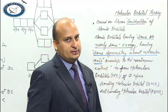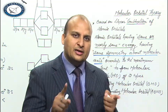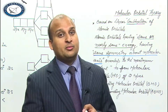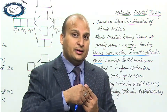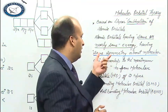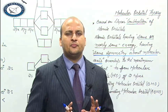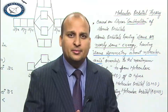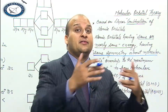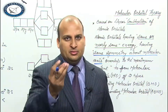Same symmetry about the molecular axis means: S orbital overlaps with S, PZ with PZ, PX with PX, PY with PY. It is not possible to combine S with P in MOT. We know that S orbital overlap gives sigma bond, PZ–PZ gives sigma, PX–PX sideways overlap gives pi, and PY–PY sideways overlap also gives pi. These are 4 basic points to remember.